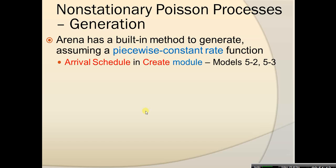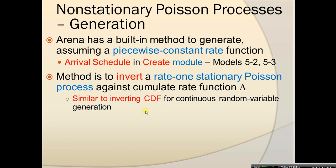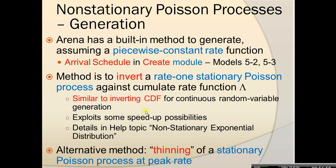ARENA's method for non-stationary Poisson generation is similar to inverting the CDF for continuous random variable generation and exploits the same speed-up possibilities. More details can be found in the help topic on non-stationary exponential distribution. An alternative method is to thin a stationary Poisson process at peak rate — thinning means not accepting some of the generated values.